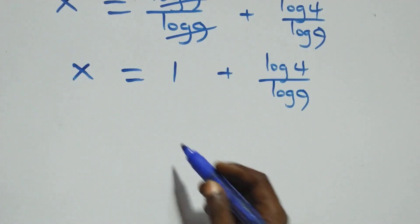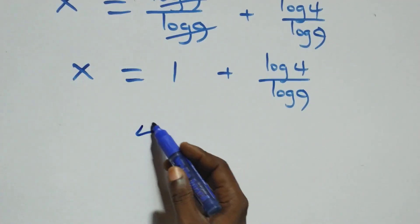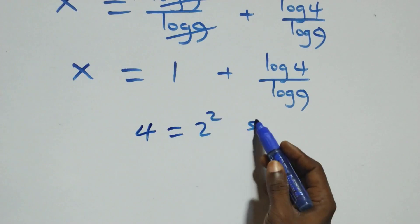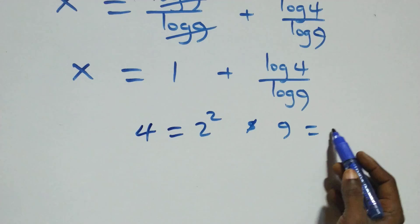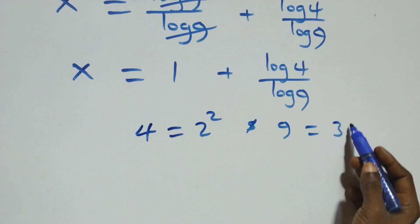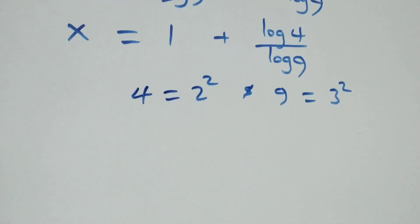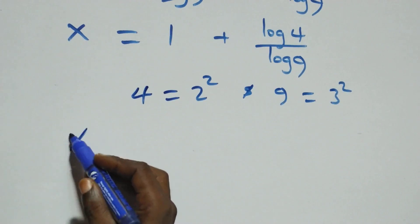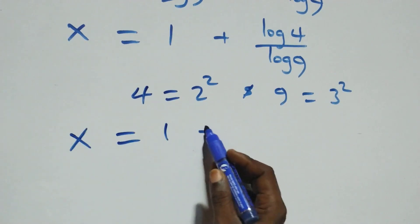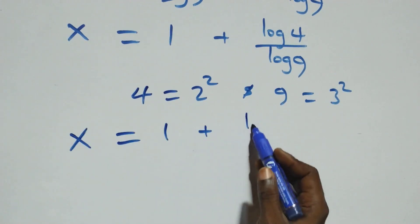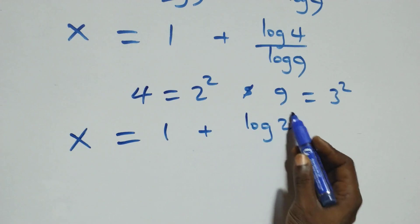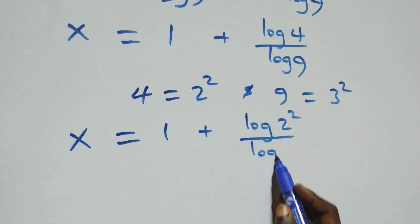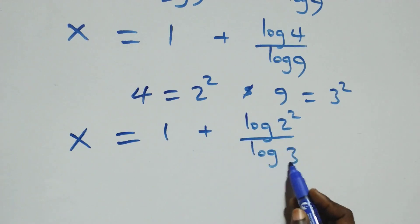From here we rewrite 4 as 2 squared and 9 as 3 squared, so what we have becomes x equals 1 plus log(2²) over log(3²).